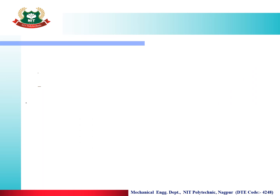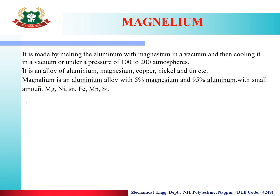The next alloy is Magnelium. Magnelium is made by melting aluminium and magnesium in a vacuum and then cooling it under pressure of 100 to 200 bar. It is an alloy of aluminium, magnesium, copper, nickel and tin, containing 5% magnesium and 95% aluminium, with small amounts of nickel, tin, iron and silicon.